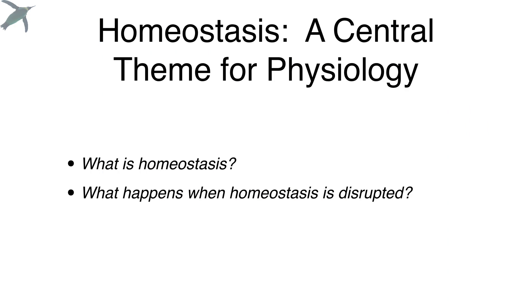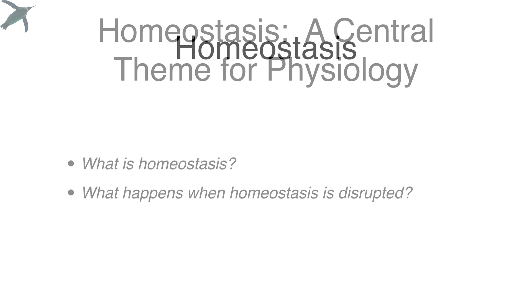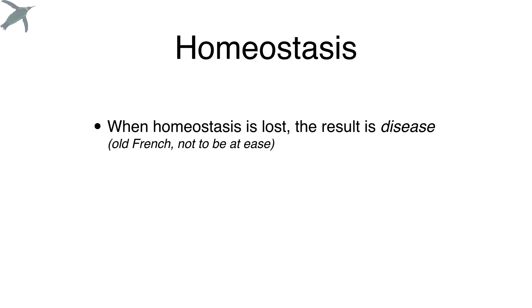Homeostasis is a central theme for physiology. I want to talk about what it is and what happens when we lose it. Homeostasis is absolutely essential for life. If you lose homeostasis, the result is disease — and this is a word a lot of people don't think too much about, but it literally is dis-ease, meaning not to be at ease.